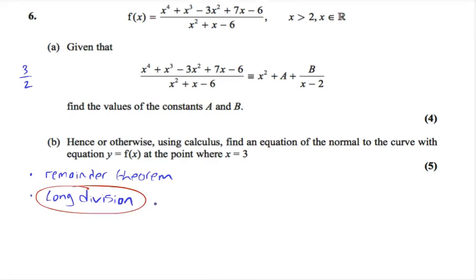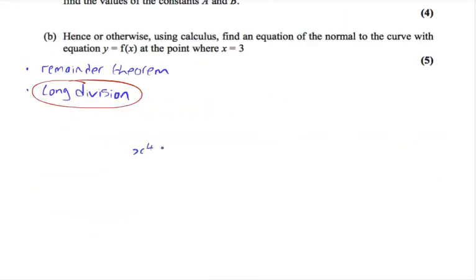We begin by writing the numerator: x to the 4 plus x cubed minus 3x squared plus 7x minus 6, divide by x squared plus x minus 6. So we need to find a term such that when multiplied by x squared gives us x to the power of 4. This term is x squared. x squared times x squared gives x to the power of 4.